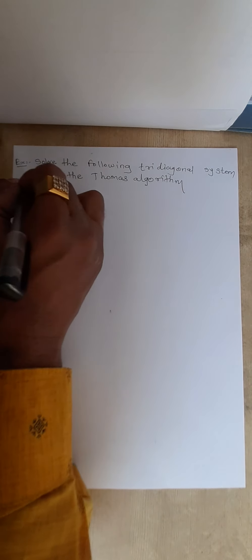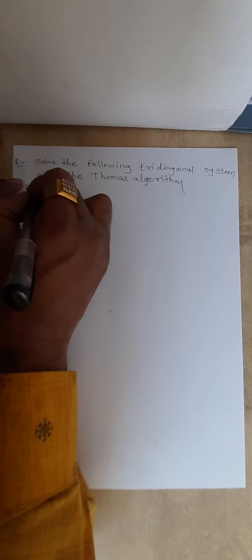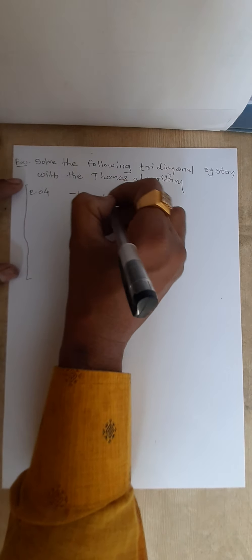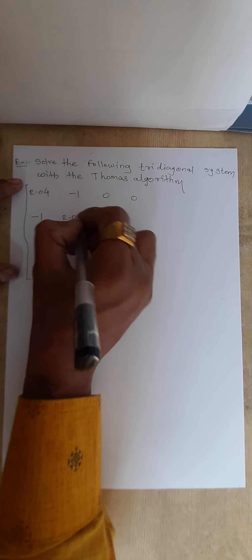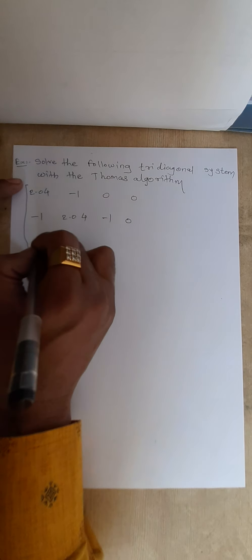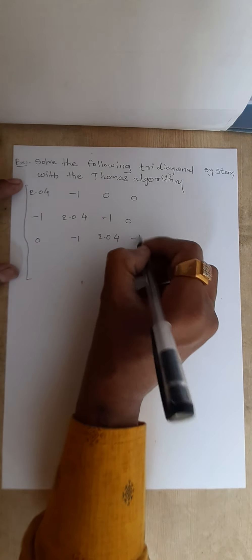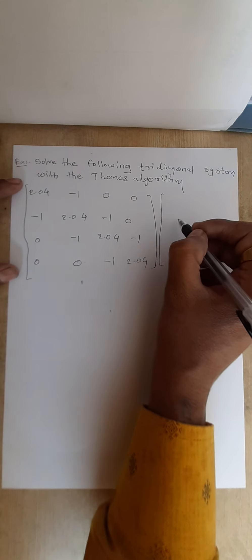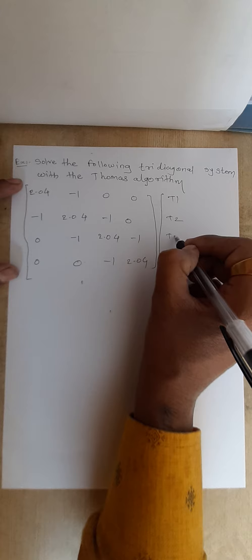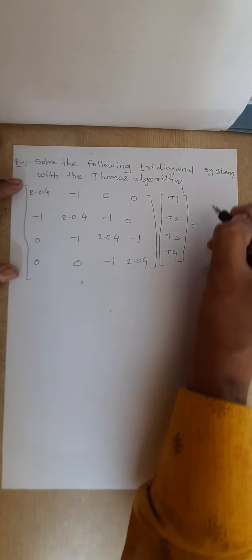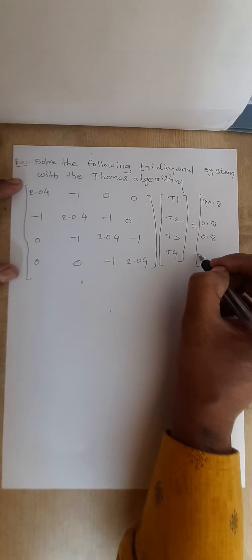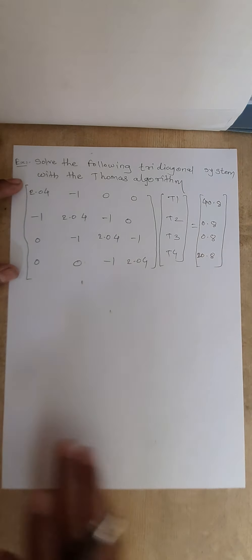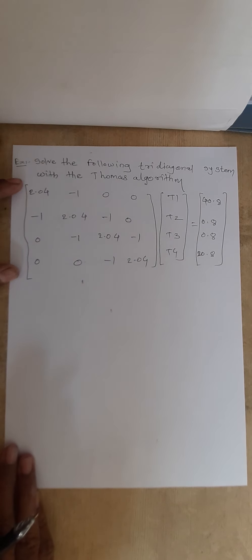In matrix form it is given as: [2.04, -1, 0, 0; -1, 2.04, -1, 0; 0, -1, 2.04, -1; 0, 0, -1, 2.04] multiplied by temperatures [T1, T2, T3, T4] equals [40.8, 0.8, 0.8, 200.8]. We are asked to solve this tri-diagonal system with the Thomas algorithm.